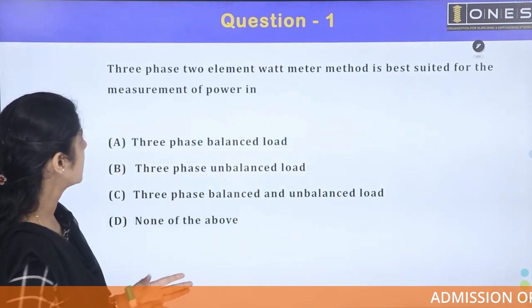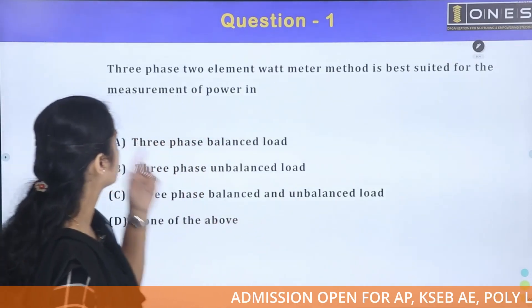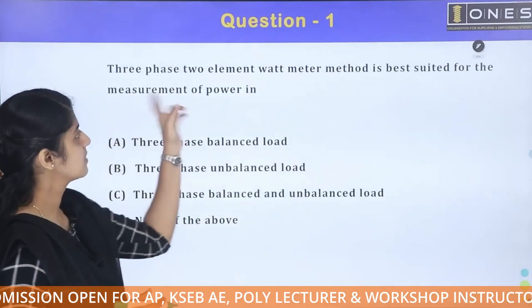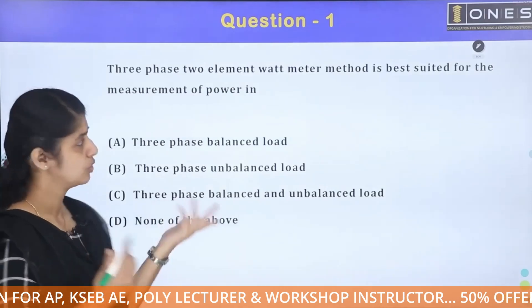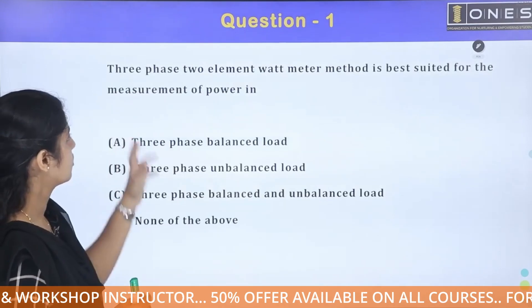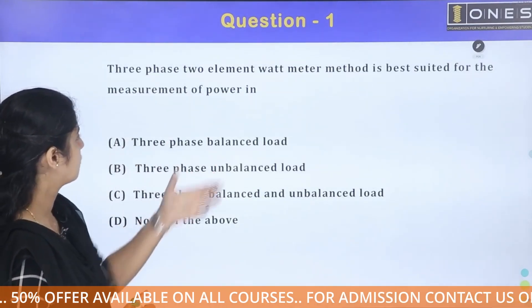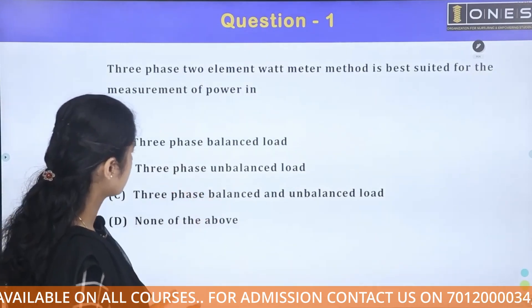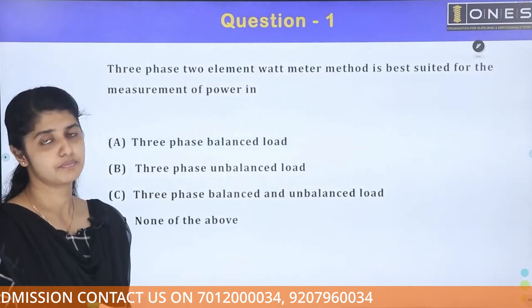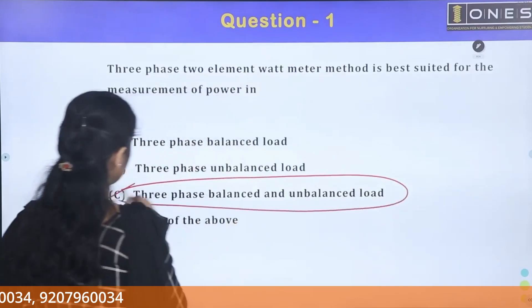First question: the 3-phase 2-element wattmeter method is best suited for the measurement of power in which type of load? The options are: 3-phase balanced load, 3-phase unbalanced load, 3-phase balanced and unbalanced load, or none of the above. The answer is: 3-phase balanced or unbalanced load.